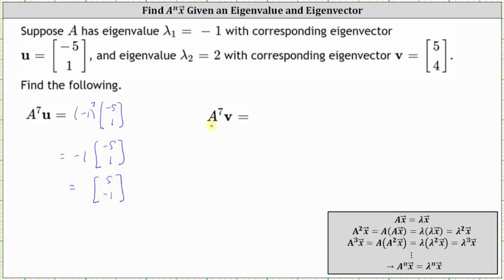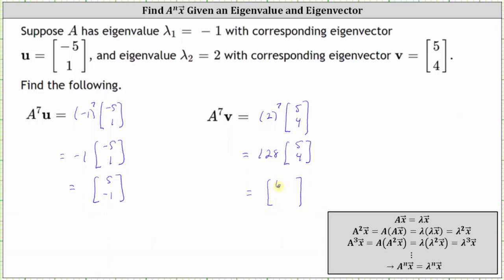Next, matrix A to the power of seven times eigenvector v is equal to the eigenvalue of two raised to the power of seven times eigenvector v, which is the vector five, four. The seventh power of two is equal to 128, giving us 128 times the vector five, four. Since 128 times five is 640 and 128 times four is 512, matrix A raised to the power of seven times eigenvector v equals the vector 640, 512.